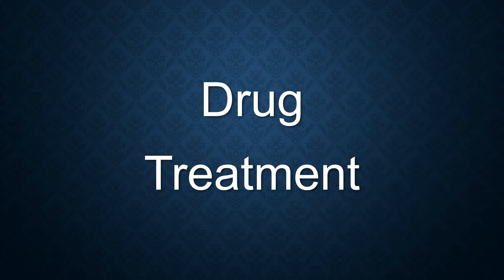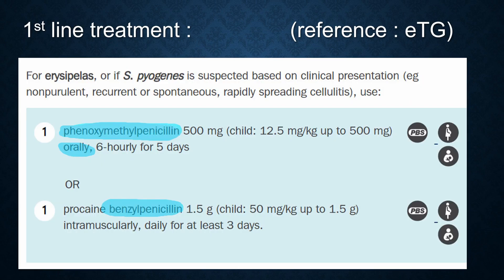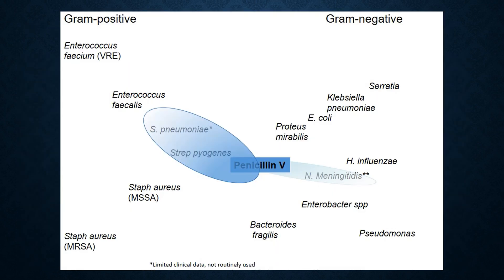Let's check out the treatment for cellulitis and erysipelas. For first-line treatment, if S. pyogenes is suspected, we use phenoxymethyl penicillin orally — in other words, Penicillin V — 6-hourly for 5 days. This is the antibiotic spectrum for Penicillin V; the first line covers Streptococcus pyogenes.